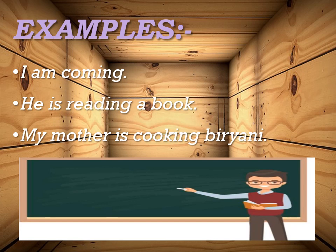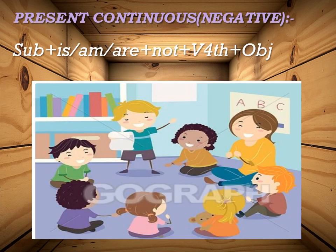Let's talk about its negative. Present continuous negative formula is: subject plus is/am/are plus not plus verb fourth form plus object. Subject ke according is, am, or are ka use kiya jayega. Uske baad not use kiya jayega. Agar subject he hai toh hum is use karenge, aur iske baad not use karenge. Uske baad verb fourth form — yani verb ke saath ing add kar denge. Object maujud ho bhi sakta hai sentence mein, or sentence object-less bhi ho sakta hai.